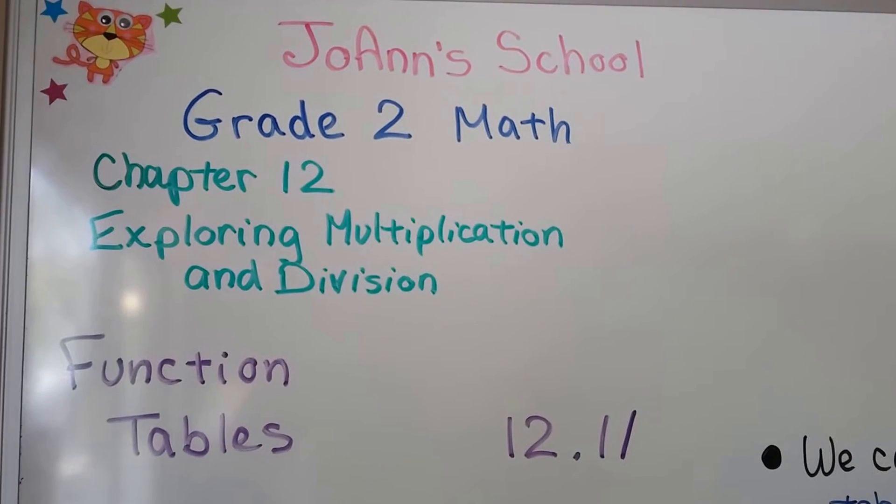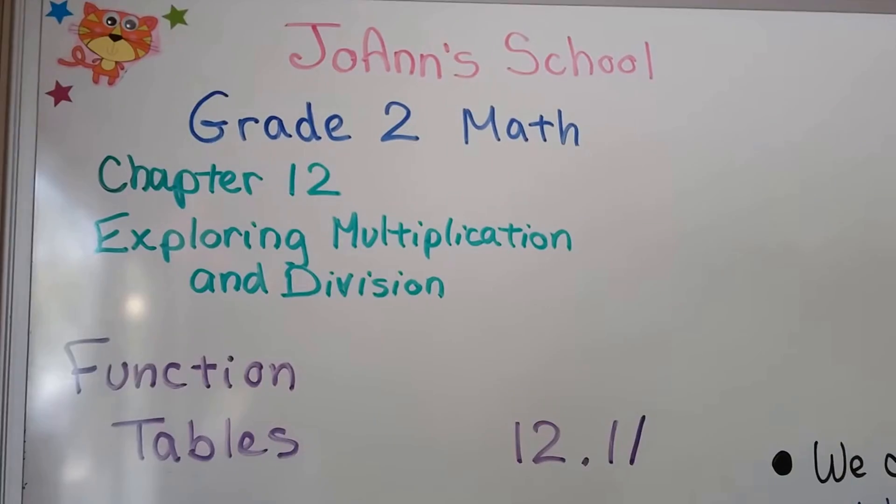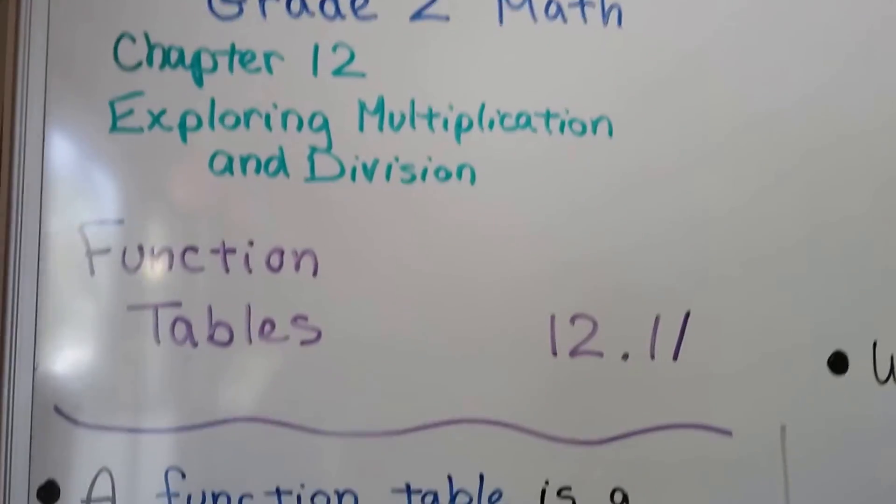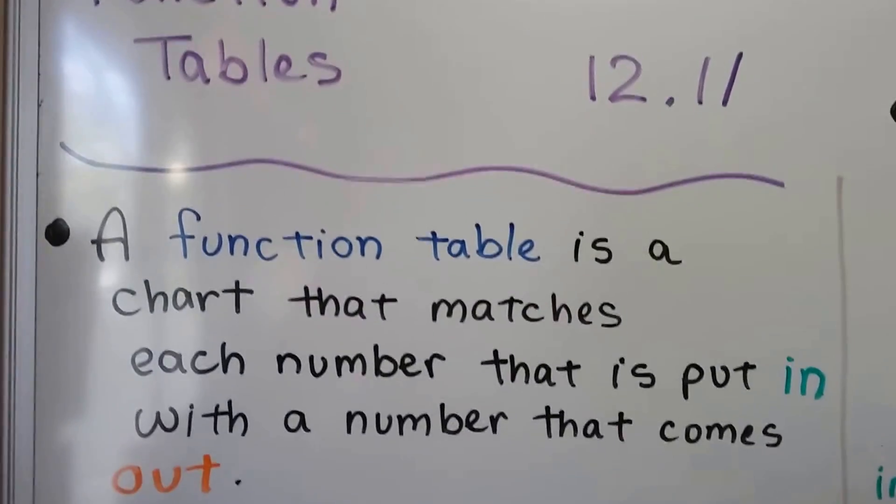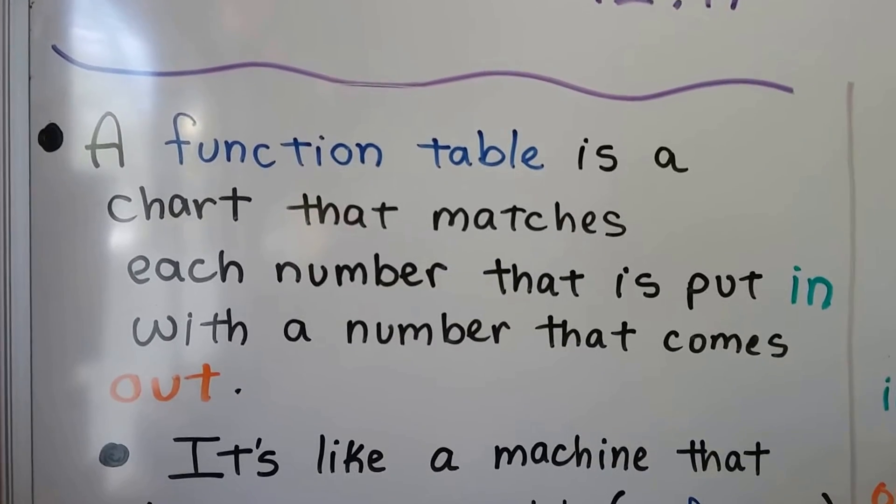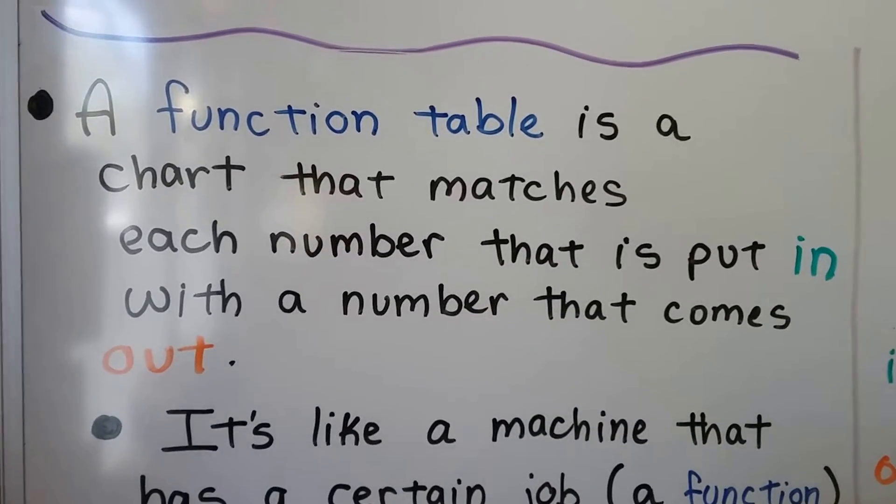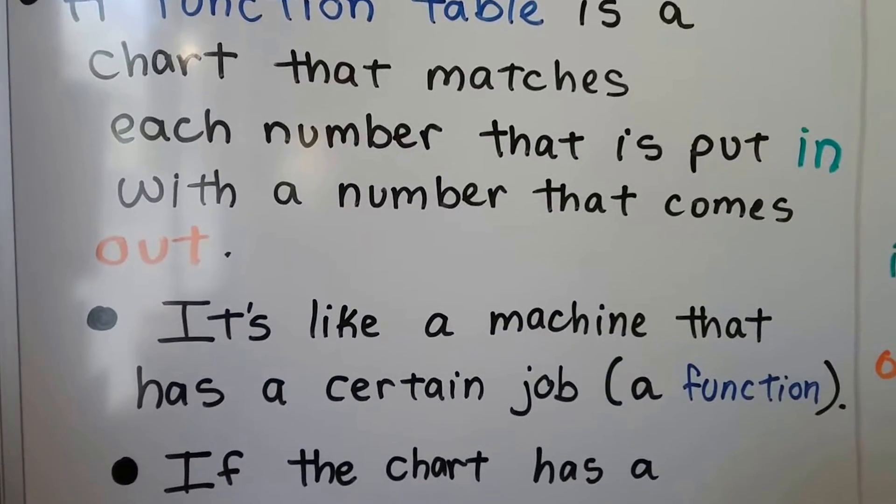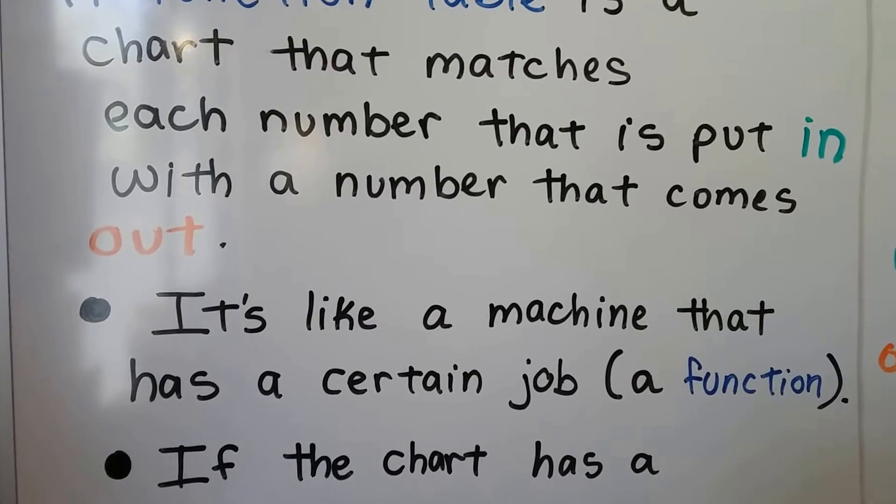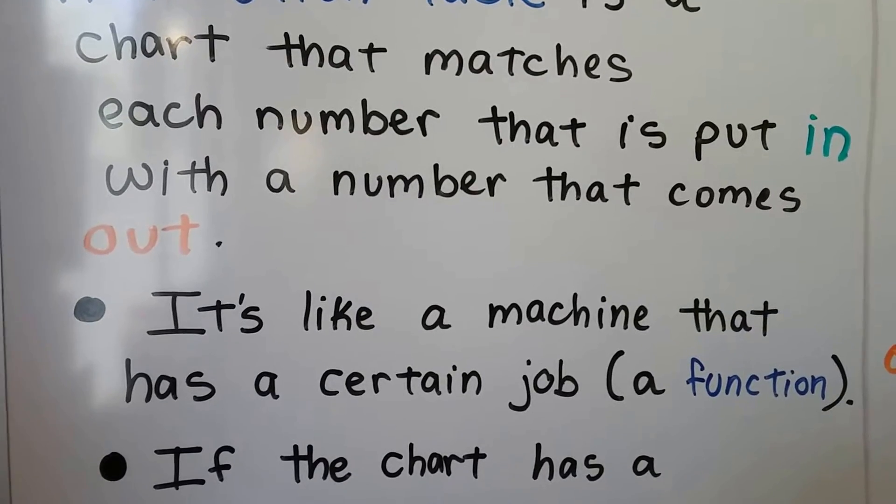We're going to talk about function tables in this video. This is lesson 12.11. A function table is a chart that matches each number that is put in with a number that comes out. It's like a machine that has a certain job, a function. That's what a function is, it's like a job.